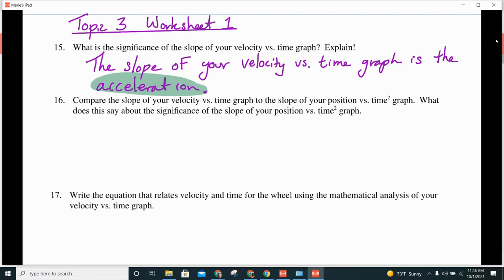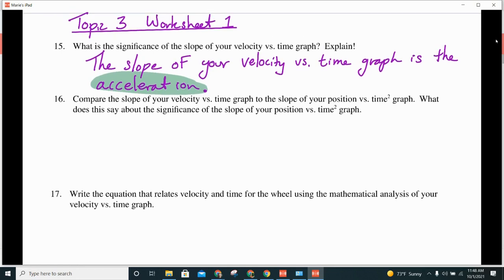All right. So, compare the slope of your velocity versus time graph to the slope of your position versus time squared graph. What does this say about the significance of the slope of your position versus time squared graph? All right. So, let's start with the velocity versus time graph. Can somebody tell me what was the slope for that?